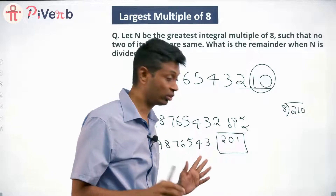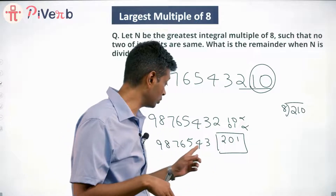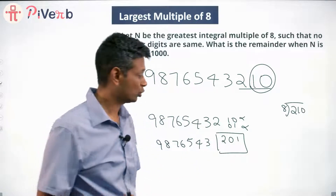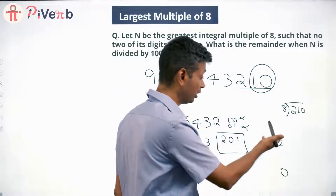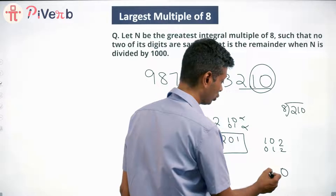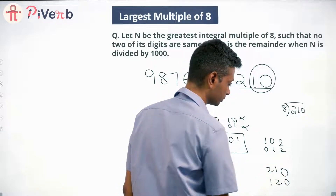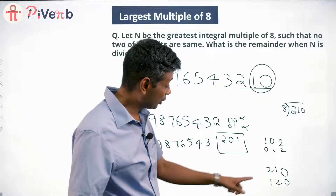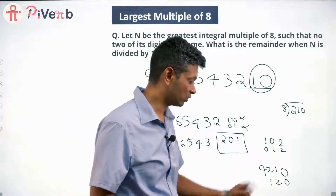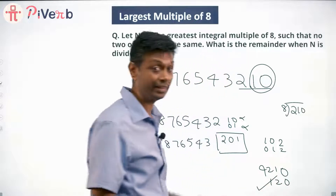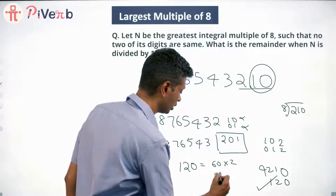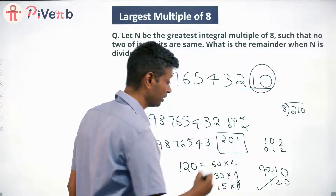Ending in 1 won't work — it's not a multiple of 8. So it should either end in 2 or end in 0. Ending in 2, we have 102 or 012. Ending in 0, we have 210, 120. The largest of these is 210, but that doesn't work. Next is 120. One, two, zero is the largest of the remaining candidates. 120 = 15 × 8, so 120 is a multiple of 8. Lovely!